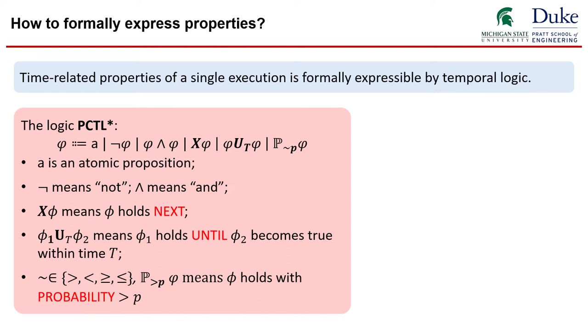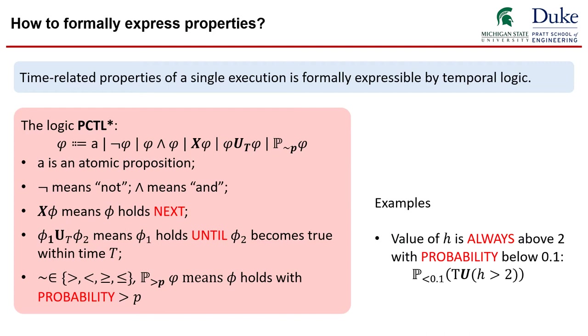And there is also a probabilistic operator reasoning about probabilities. Using the logic PCTL star, we can express formally general properties of interest. For example, if you want to express that the value of the variable h is always above 2 with probability below 0.1, then this probability can be expressed by a PCTL star formula like this.